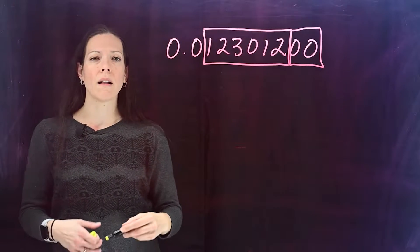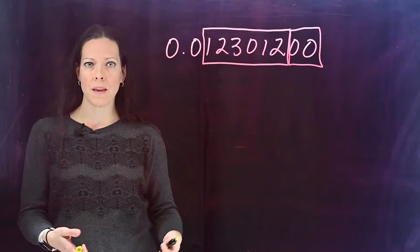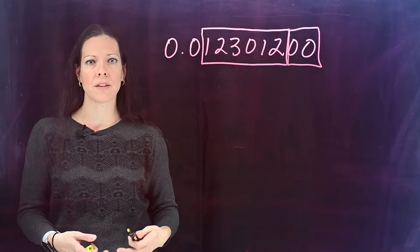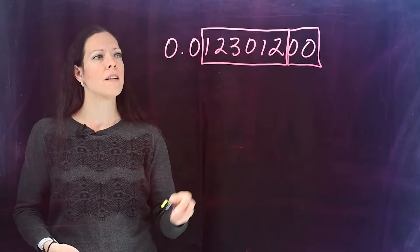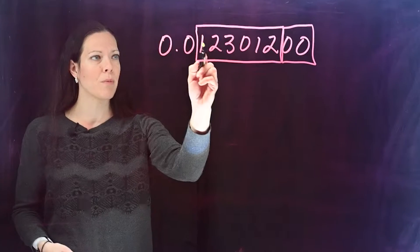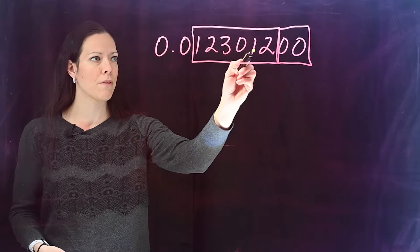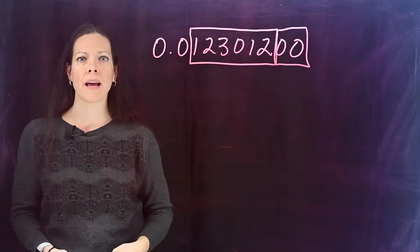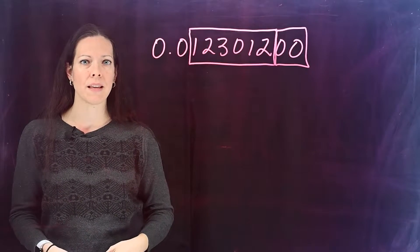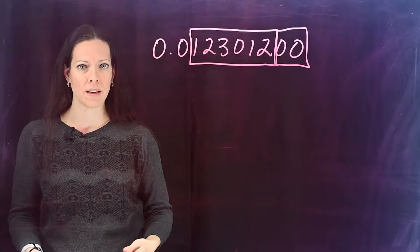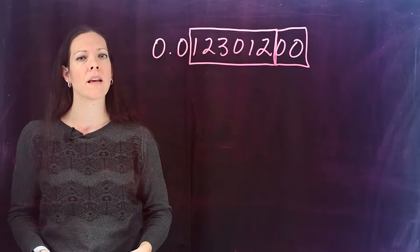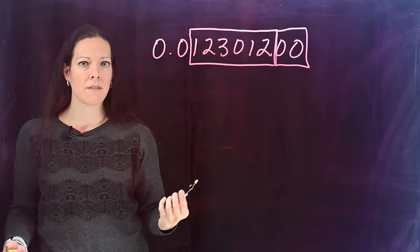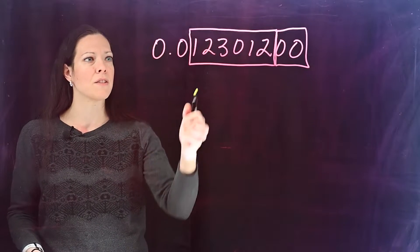At this point, all of the zeros within the box are considered significant, so we can count them up: 1, 2, 3, 4, 5, 6, 7, 8. This number would have 8 significant digits or significant figures. Leading zeros are never significant anyways.